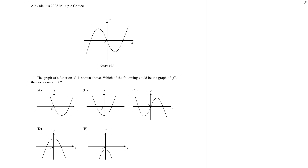Okay, here we go, 11 to 20. F is shown, which is the graph of f prime. Again, two minutes per problem. The derivative is 0 here and 0 here. So at this point and this point, the derivative is 0. So it can't be that guy.